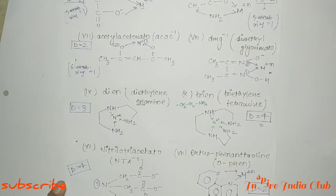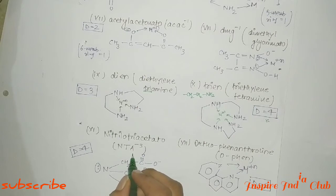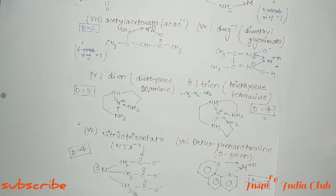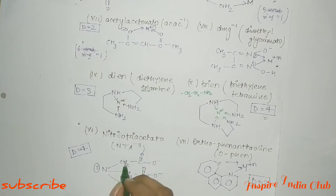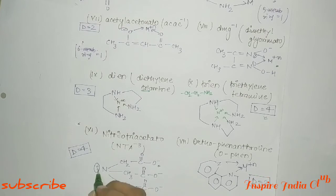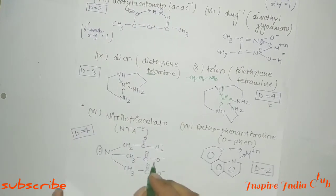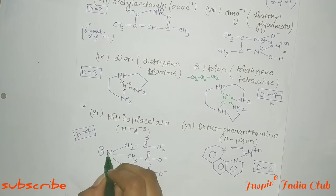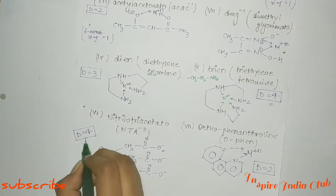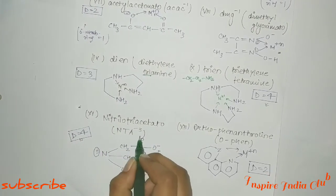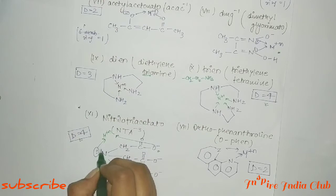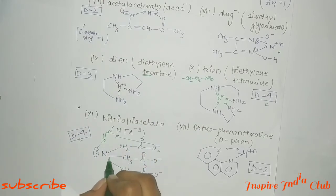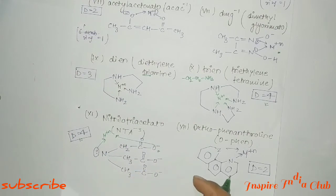Next is nitrilo triacetate, denoted NTA³⁻. It has one nitrogen and three acetate groups. The structure is nitrogen bonded to three acetate (CH2COO⁻) arms. Nitrogen has a lone pair and each oxygen of the acetate groups has a lone pair, giving 4 donor sites. Denticity is 4, and donating all 4 lone pairs gives 3 five-member rings, which are more stable.